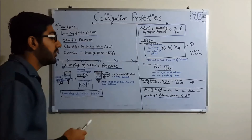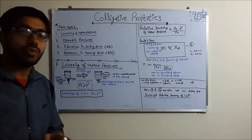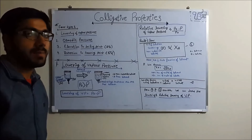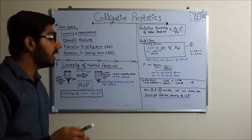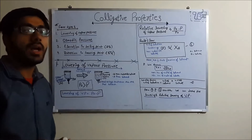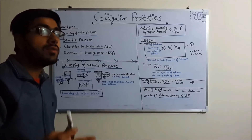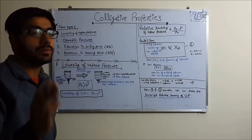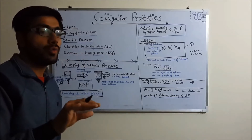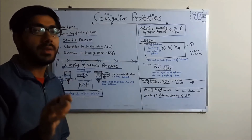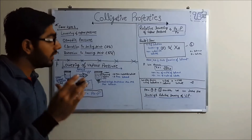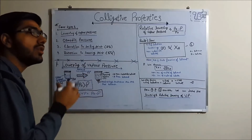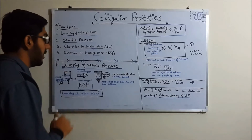Why does vapor pressure decrease? Because the pure solvent alone has very high vapor pressure. But when you add a non-volatile solute — non-volatile means it will not rise, meaning its own vapor pressure is low — it keeps the volatile solvent from escaping freely. This is why vapor pressure of the solution will be less than vapor pressure of the pure solvent.